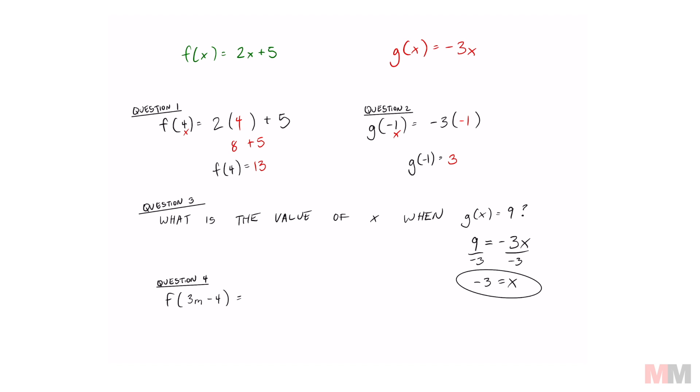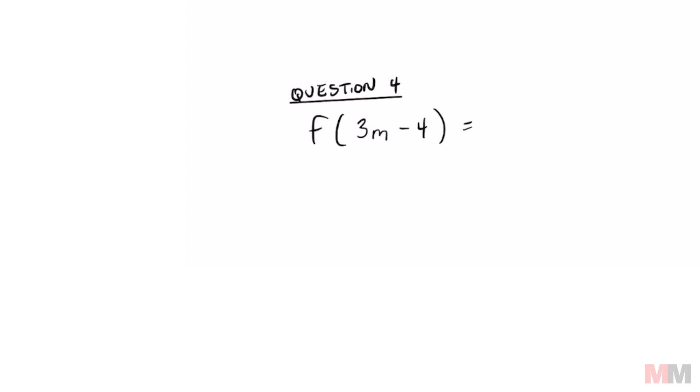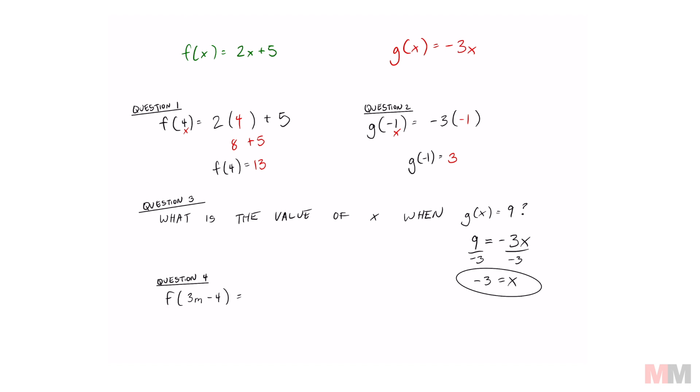And the last question, question number four. Sometimes you'll get an expression. It's no longer a number in there, it's an actual expression. The letter f tells me that I need to use the green function. This is what I'm going to replace x with. And that's why I like to write an open set of parentheses first by looking at this expression. This is what you're putting inside this parentheses right here. That is what I'm replacing x with, 3m minus 4. So your function's not always going to equal a number. This one's going to be an expression.